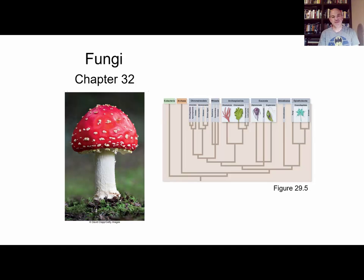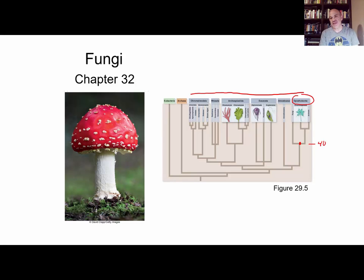The topic for this lecture is the kingdom fungi. The kingdom fungi is found in the domain Eukarya, which includes the supergroups we covered earlier. The common ancestor for both fungi and animals in the supergroup Opisthokonta seems to have existed about 460 million years ago.